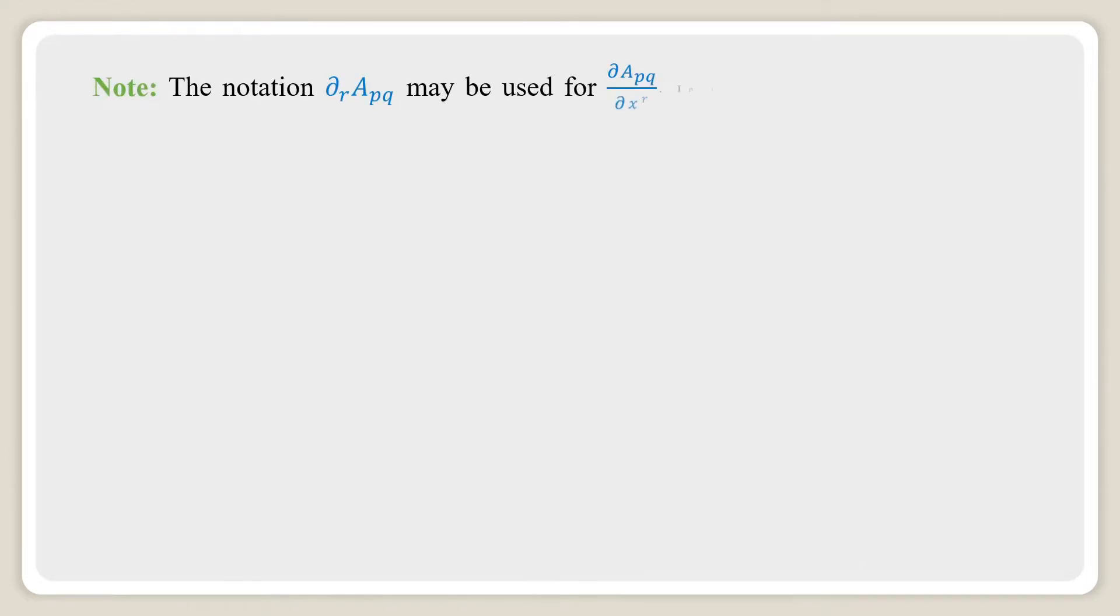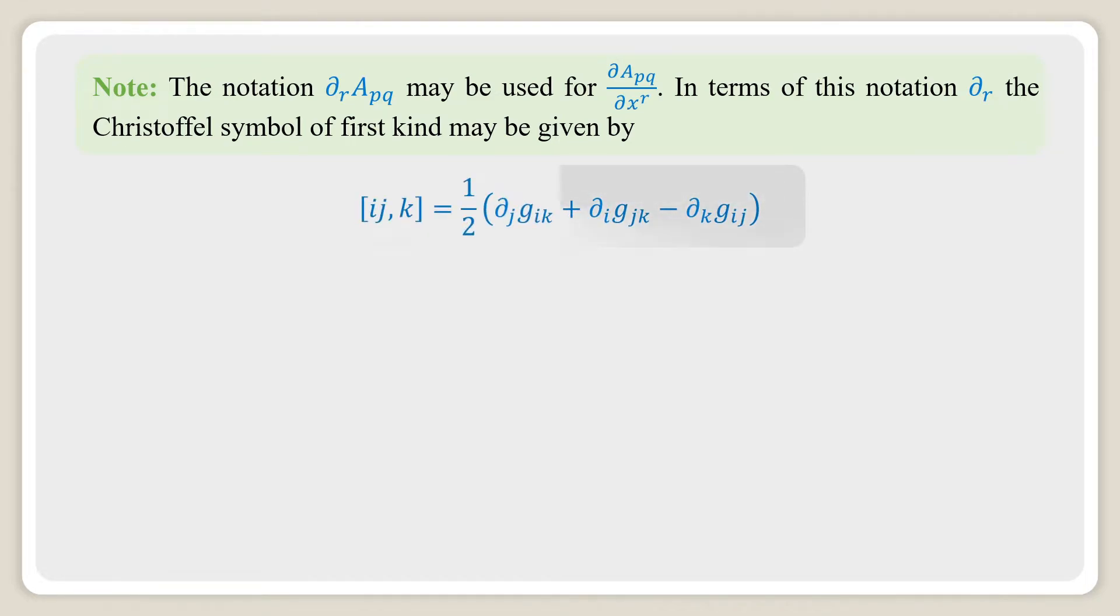The notation del R APQ may be used for del APQ divided by del XR. In terms of this notation del R, the Christoffel symbol of first kind may be given by IJ comma K within square bracket equal to half of del J into G IK plus del I into G JK minus del K into G IJ.